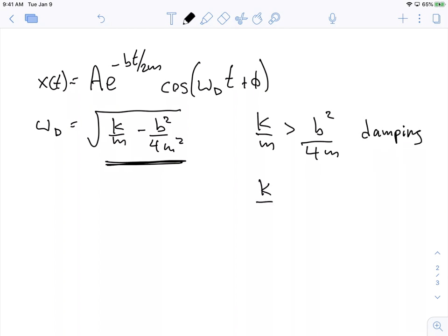There's the case where k/m is equal to b²/4m². And so this is called critical damping. And what we notice here, if k/m is equal to this, then ω_d is equal to 0. And there's actually no oscillation. So the system just decays down, as fast as possible. And so critical damping is often what we want to use in shock absorbers in cars and stuff like that. Things that we don't want to bounce around, we try to critically damp.